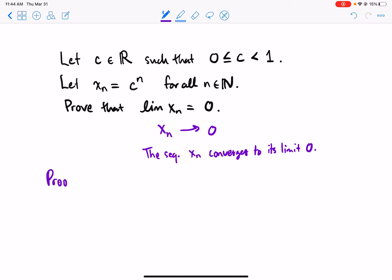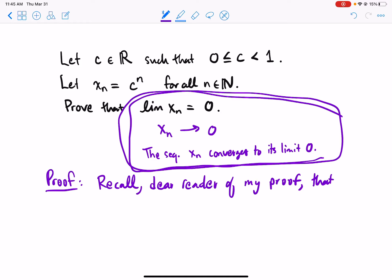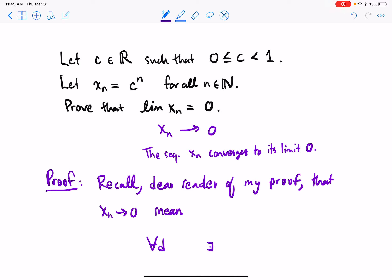Proof. Recall, dear reader of my proof, what it even means for these symbols to be true. That's really important. The first step of your proof is remind the reader what is even the definition of the symbols in the statement of the theorem. That the symbols x sub n goes to 0 mean: for all d, there exists a capital N cutoff such that going past the cutoff implies that the |x_n - 0| are less than d.